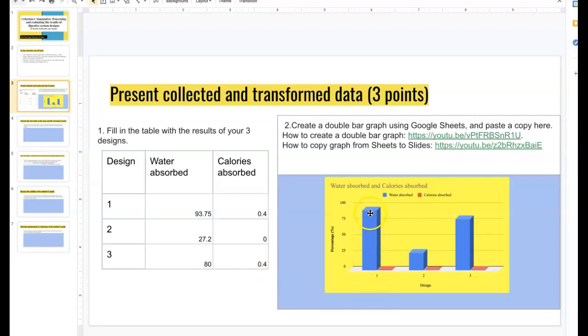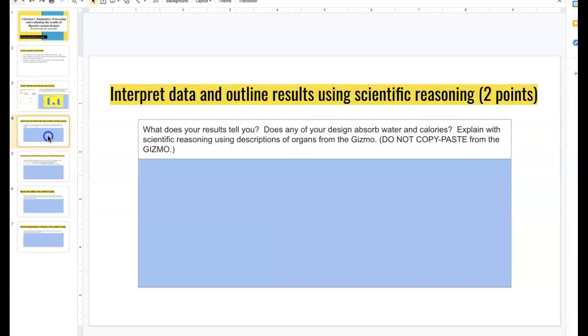For this person, it looked like design 1 did absorb the most water, but it still didn't absorb a lot of calories. So with that, this person can say that yes, my data supported my hypothesis, although it still didn't absorb a lot of calories. And then talk about what's probably missing, why the absorption of calories didn't happen. And then talk about why did the absorption of water happen? What organs did you use for that to happen?